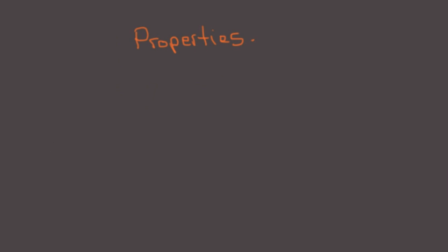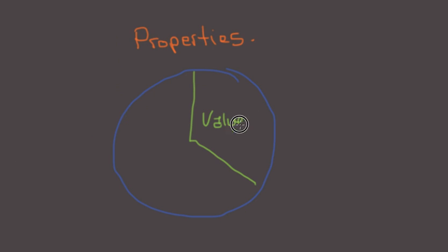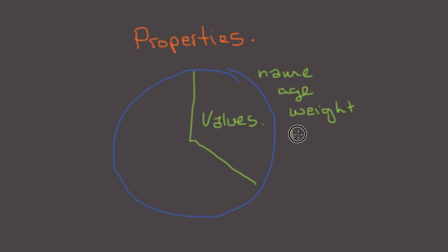Everything is pretty much properties. First of all we have values — things like name, age, weight, height, cost, hit points, etc.